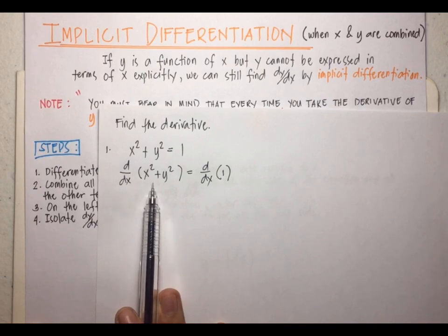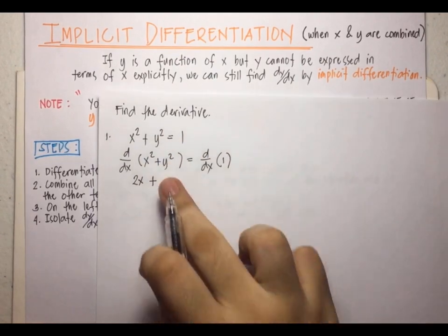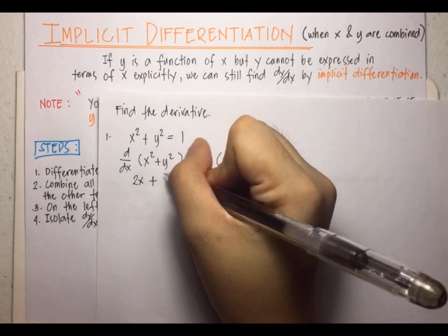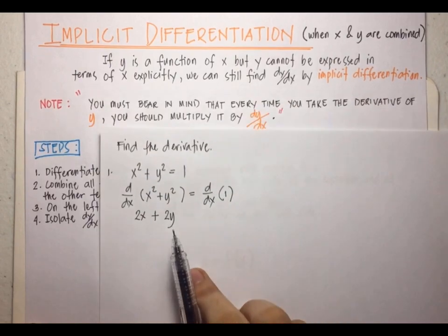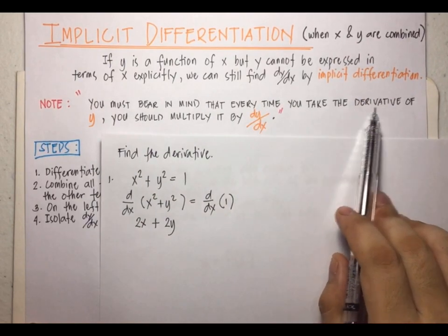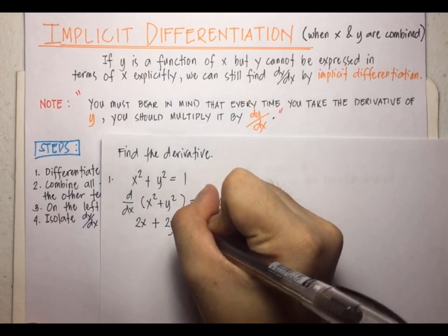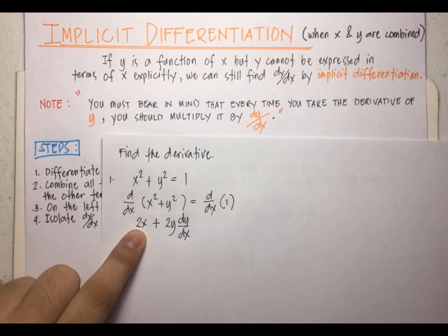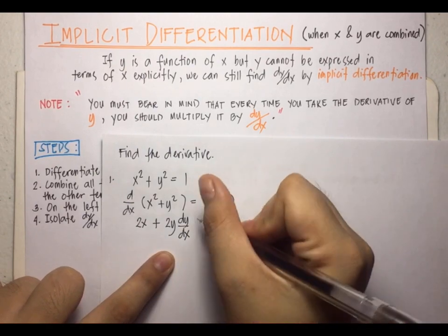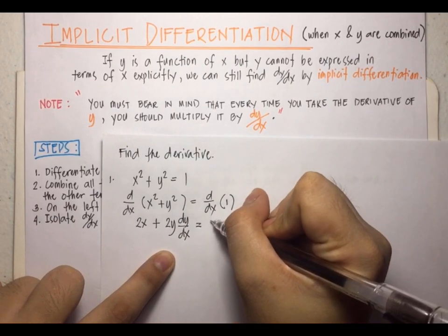Applying the power rule, the derivative of x² is 2x. The derivative of y² is 2y — applying the same power rule. However, since we are taking the derivative of y, we must multiply it by dy/dx, giving us 2y · dy/dx. We don't write dy/dx for the x term since it's x, not y. The derivative of the constant 1 on the right side is 0.